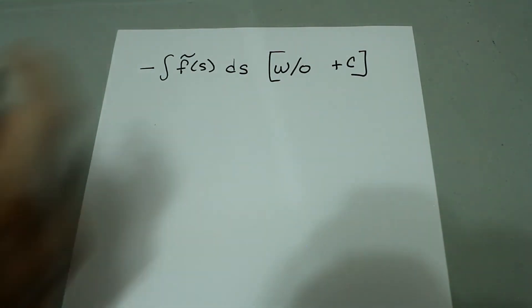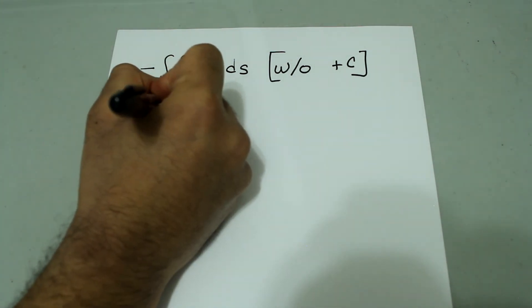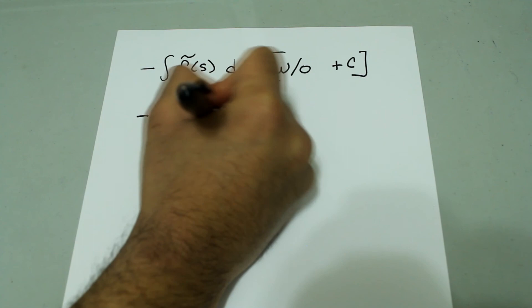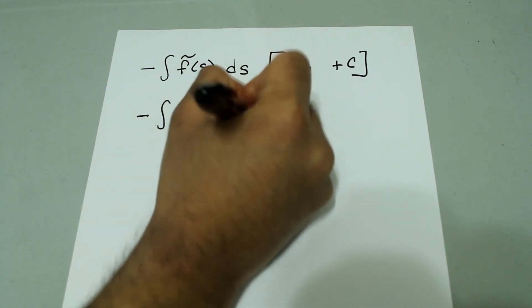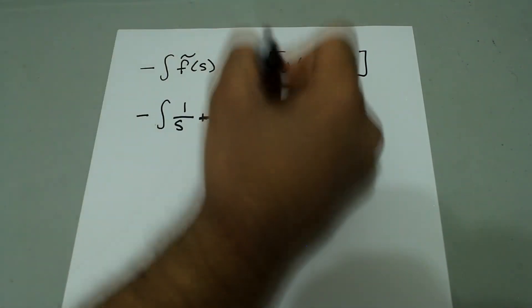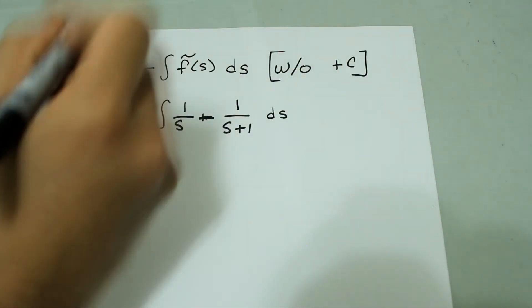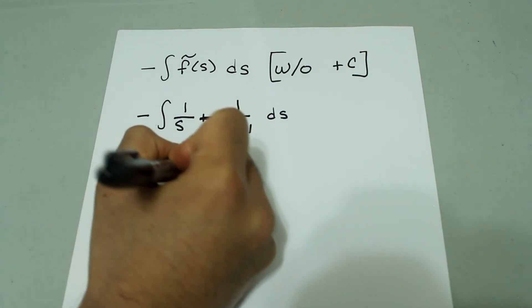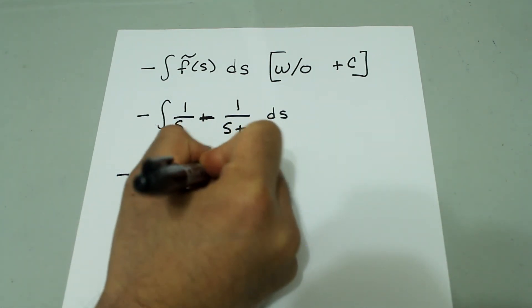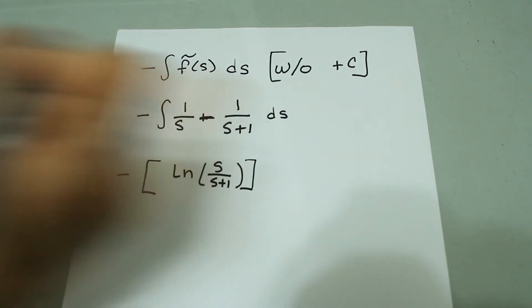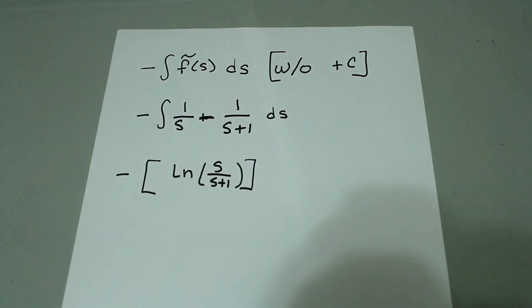So, let's say, for instance, we just did negative integral of 1 over s minus 1 over s plus 1, which was the Laplace transform of f of t with respect to s. Then, we get negative and then we get natural log of s over s plus 1, which was our answer.